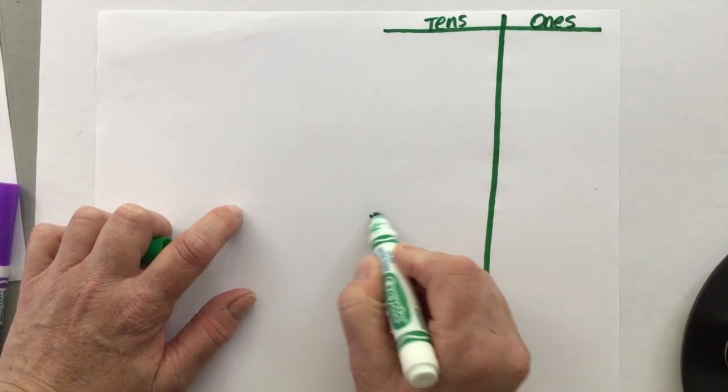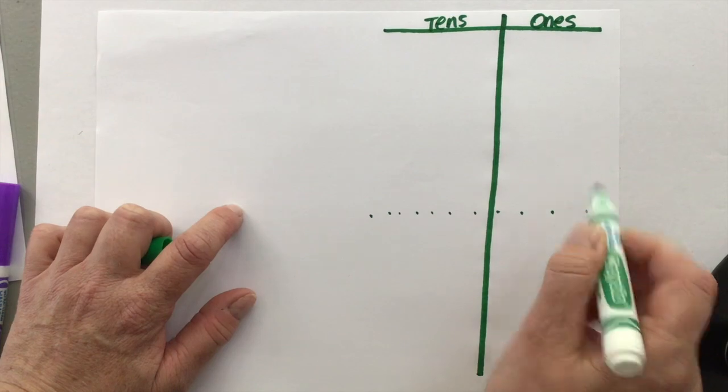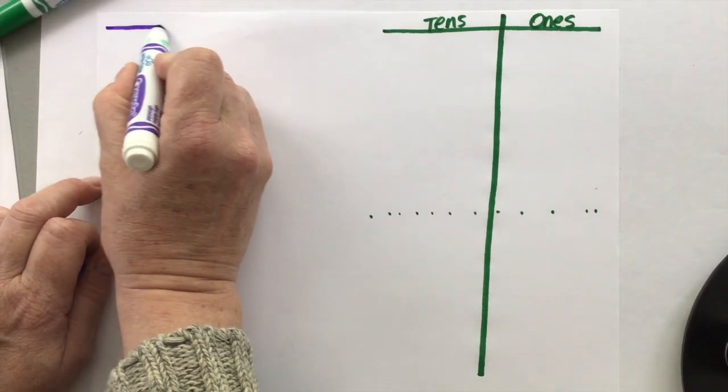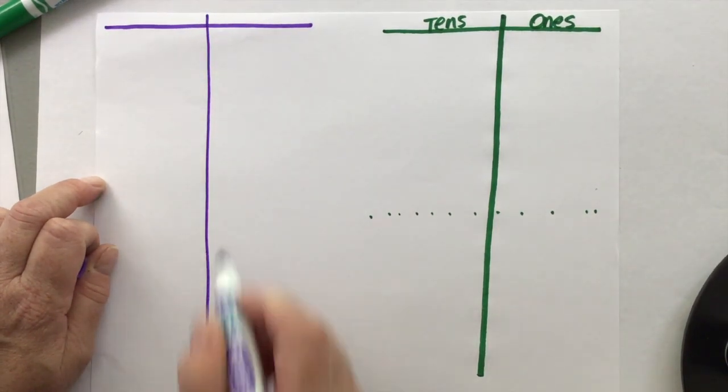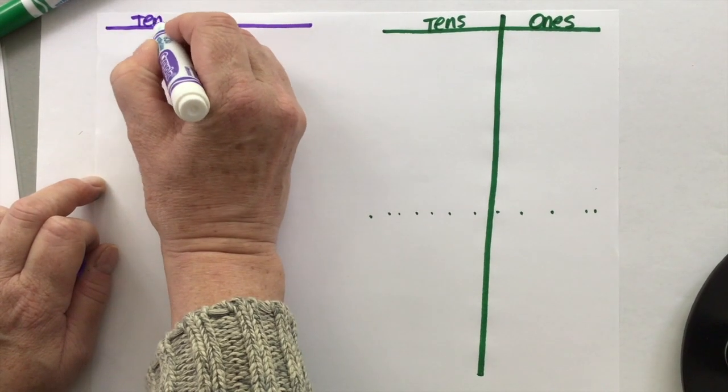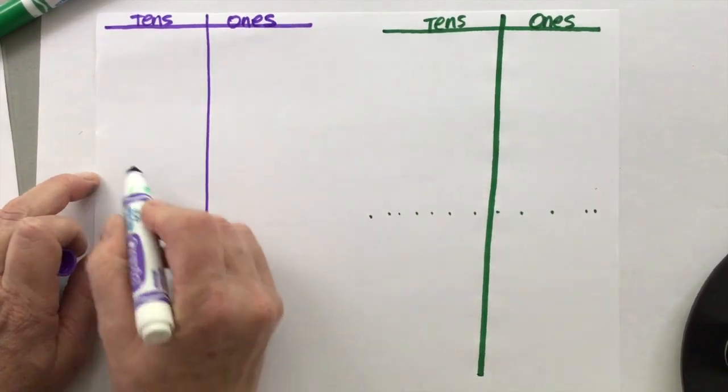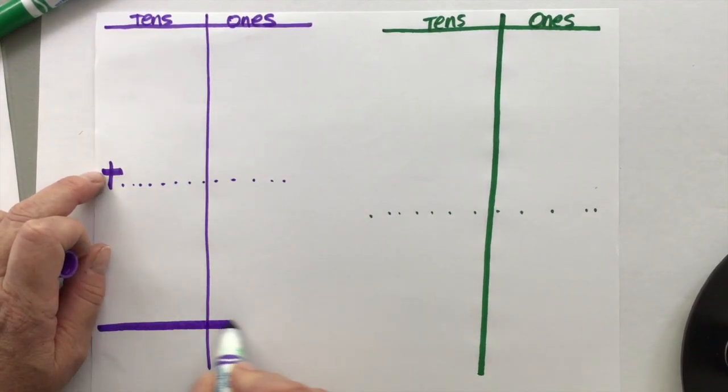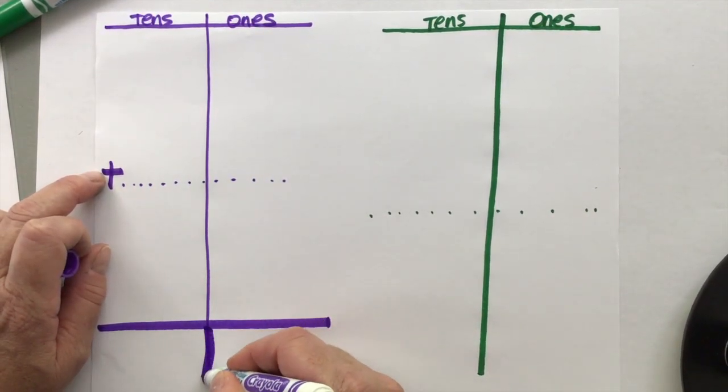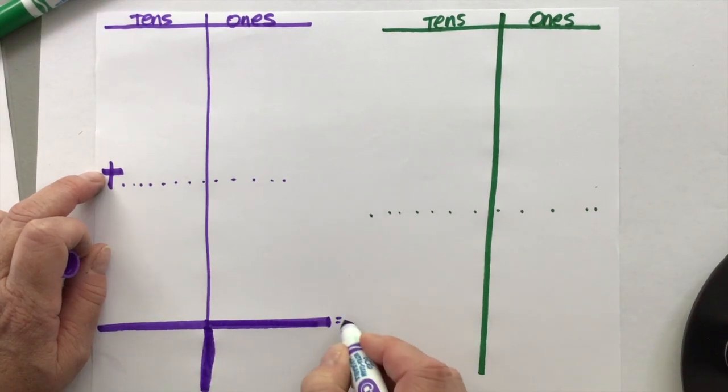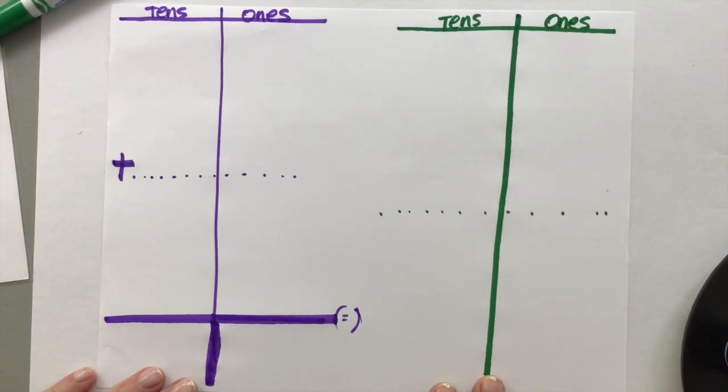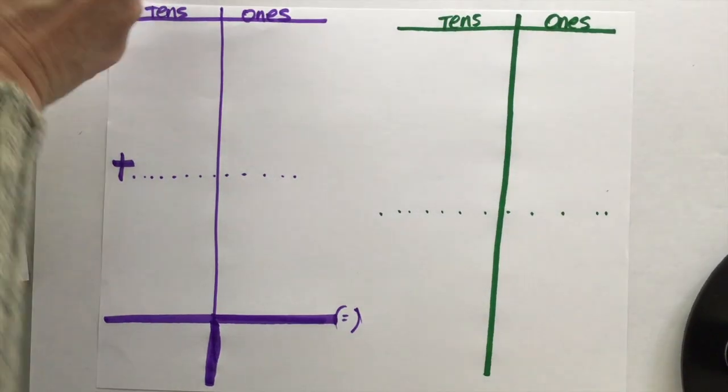Over here, we're going to build it. This number plus this number. And I'm going to use a different color on this side because over here, we're going to use our numbers, tens and ones. We need our plus sign over here. And then where we write the answer, this number is the equal sign. So get yourself your place value board set up and we will begin.